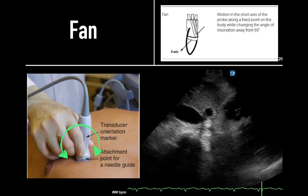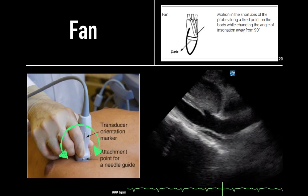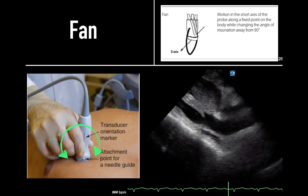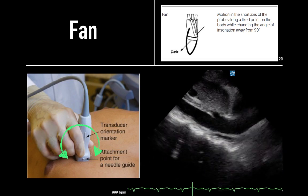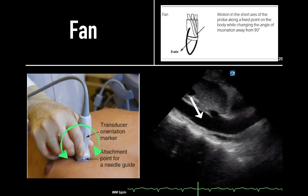If we placed the probe in the subcostal region with the probe marker cephalad in the sagittal plane, then fanning will reveal the inferior vena cava and aorta in parallel with each other. Here is the aorta and the IVC.